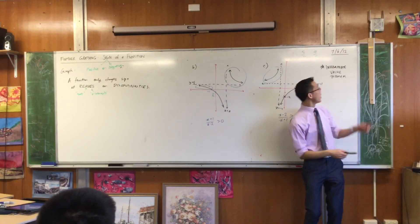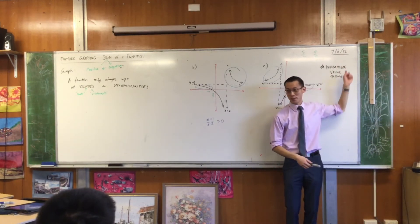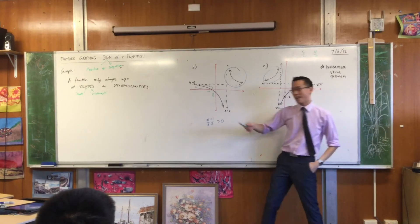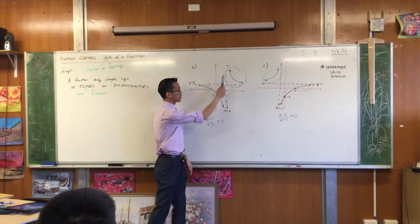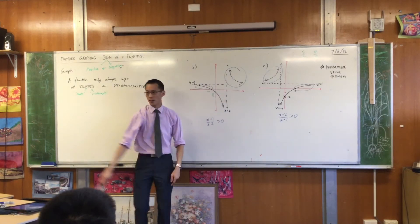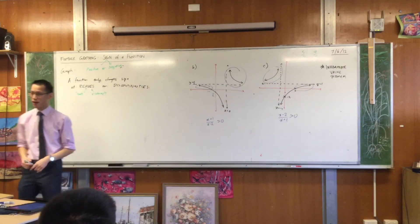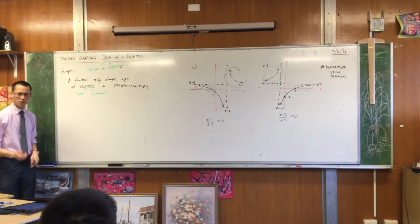Do you see why, and this is where the intermediate value theorem is named from, do you see why, if you want to change sign, from negative to positive, or positive to negative, you have to pass through a zero, if you don't pass through a discontinuity. Can you see why?